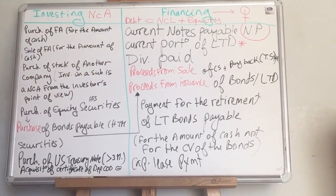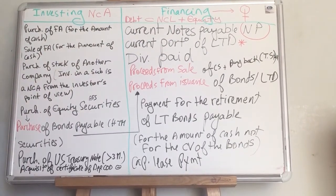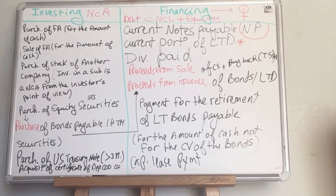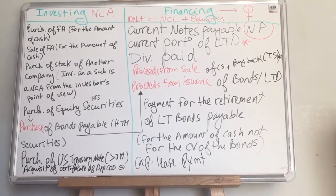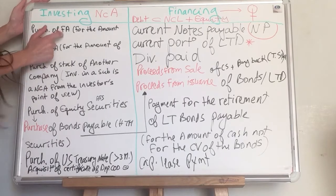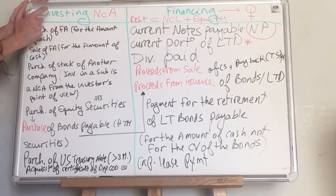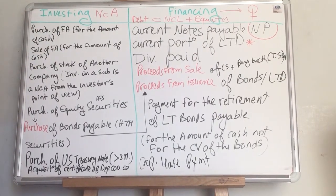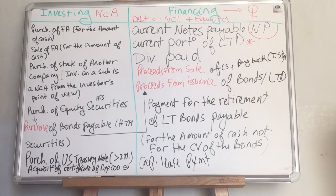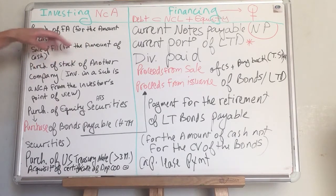When we talk about the investing section, it's non-current assets — all non-current assets like fixed assets. The purchase of fixed assets is reported in the investing section for the amount of cash. The sale of fixed assets as well — it's reported for the amount of cash. Obviously, this is the statement of cash flows.